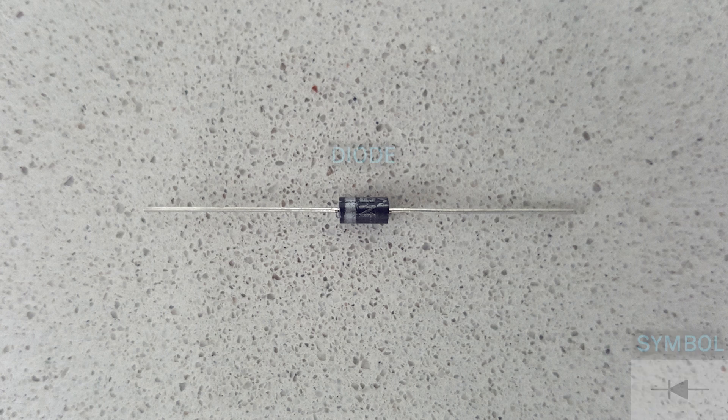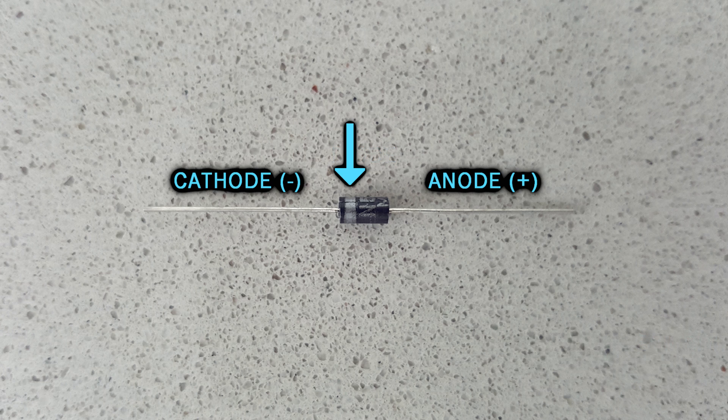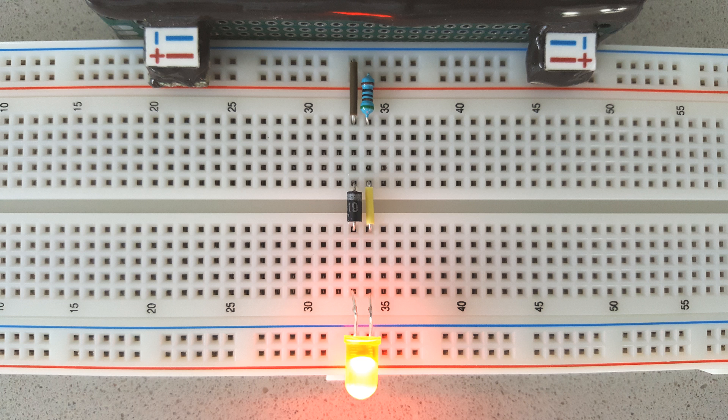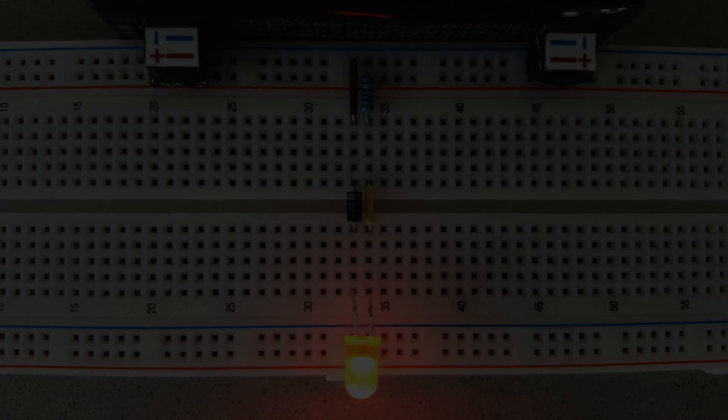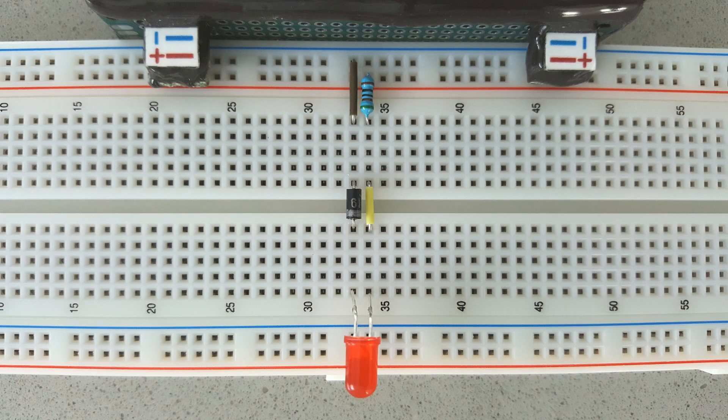Another basic component is the diode, which restricts the flow of current to one direction only. They have a line in one side to indicate the cathode that if connected to ground, it will let current go through without much opposition. But if the positive side is connected to the cathode terminal, then it will not let the circuit work.